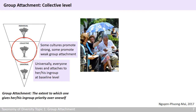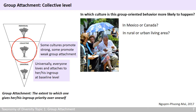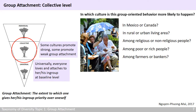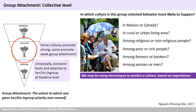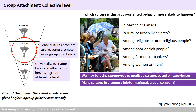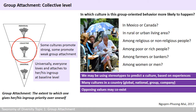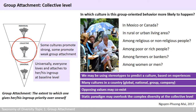Let's have a little guess. In which culture is group-oriented behavior more likely to happen — in Mexico or Canada? In rural or urban areas? Among religious or non-religious? Among poor or rich? Among farmers or bankers? By answering these questions, we are probably using stereotypes based on our own experience, which is fine in a way. But it also shows that we have so many cultures within a country, and opposing values can coexist. This reminds us of the static paradigm, which gives each country a number — and now we can see that such a number may overlook the complex diversity at the collective level.